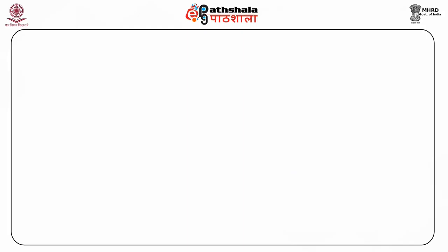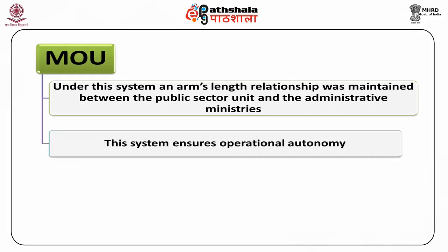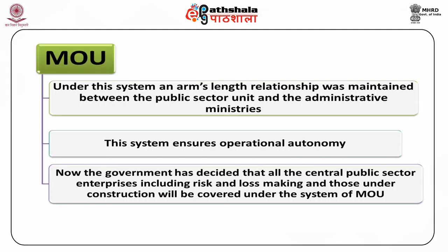Third, the same policy for sick public sector enterprises had been introduced as that for private enterprises. As a result, the public sector enterprises were also brought under the jurisdiction of the Board for Industrial and Financial Reconstruction (BIFR). The responsibility to decide whether a sick public sector enterprise is required to be restructured or closed down lies on BIFR. Fourth, all the public sector enterprises had been brought under the system of MOU — Memorandum of Understanding. Under this system, an arms-length relationship was maintained between the public sector unit and the administrative ministries. This system ensures operational autonomy. The government has decided that all central public sector enterprises including risk and loss-making and those under construction will be covered under the system of MOU.